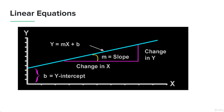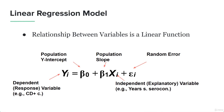Every linear equation has two particular things: the slope, which is defined by M, and the y-intercept, where the line cuts the y-axis. These two things — slope and y-intercept — enable us to model the linear equation and give it its shape. The linear regression model represents the relationship between different variables using a linear function. We have the population y-intercept, the population slope, and the random error. So we have the dependent and independent variables, and we calculate the y-intercept, slope, and random error to model the relationship using a linear regression model.